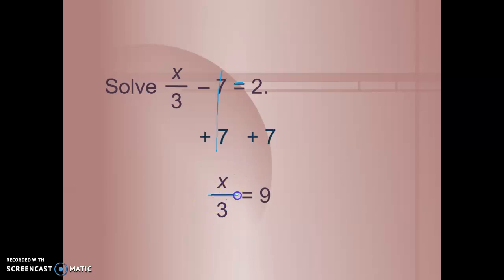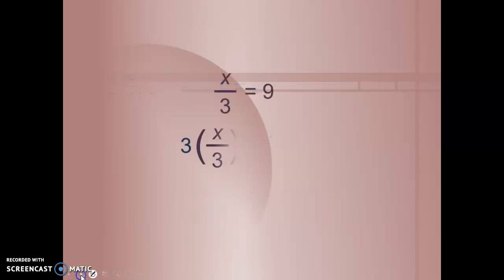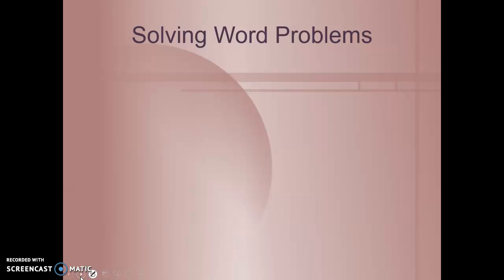Because this is being divided by 3, I need to do the inverse operation, which is multiplying by 3. Whatever I do to one side, I have to do to the other. And I get x equals 27. If I plug that back into my original equation, it does check out as correct.